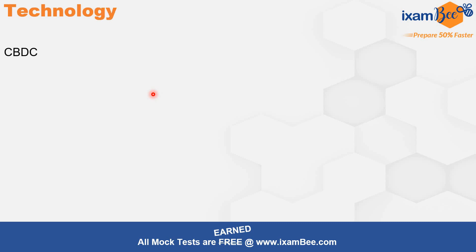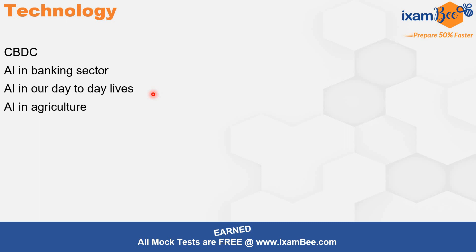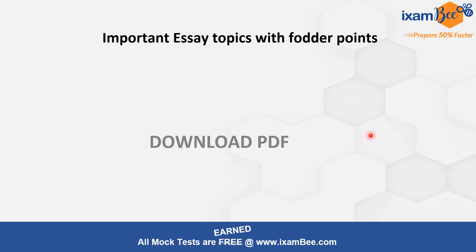Then talking about technology — these are the important topics. CBDC (central bank digital currency) can be asked. Then AI in the banking sector and various aspects of AI, like AI in our day-to-day lives, AI in agriculture — agriculture is particularly important because it affects our country as a whole, as India is dependent on agriculture. Use of technology in agriculture and in banking can also be asked. Now friends, the link to this PDF is given in the description box below. Please click on it to download the PDF. You will get an extensive list of topics along with further points, giving you an idea of what needs to be written if you get these topics in your exam.